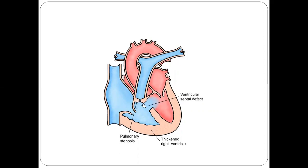Whenever there is blockage due to this pulmonary stenosis, the right ventricle has to work more to pump blood against this stenosis, thus leading to right ventricular hypertrophy. Also, because of the movement of this septum, there is overriding of the aorta.